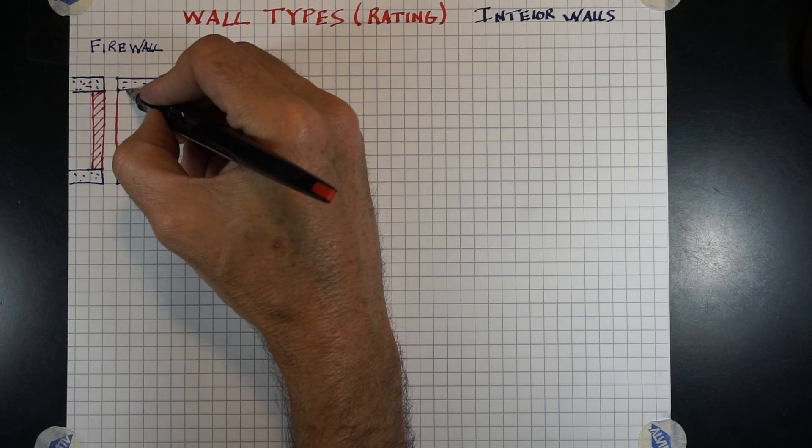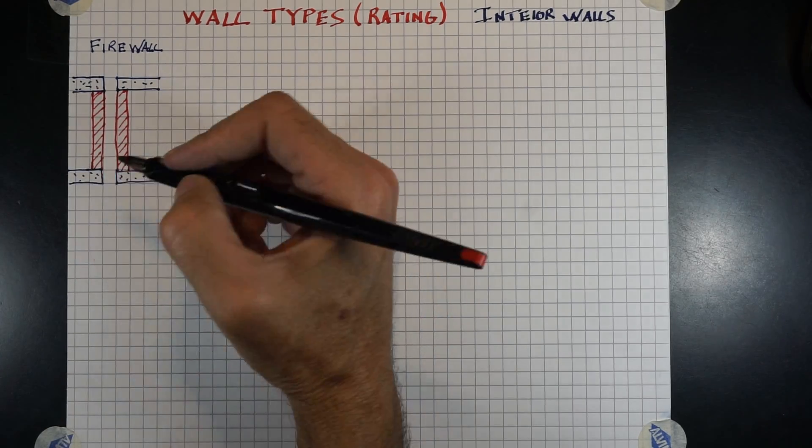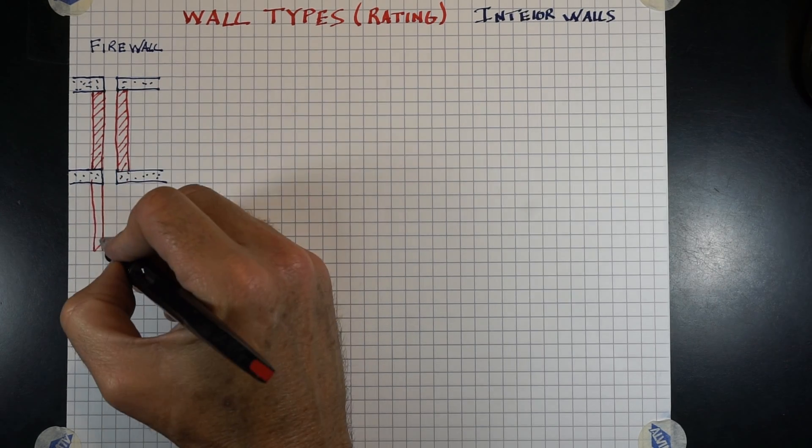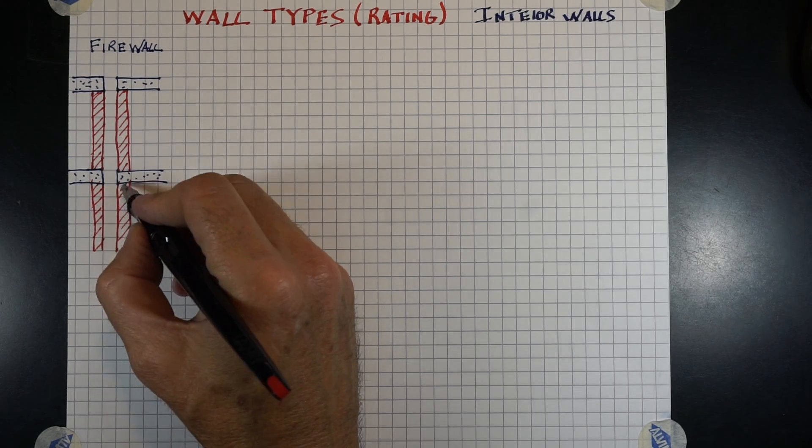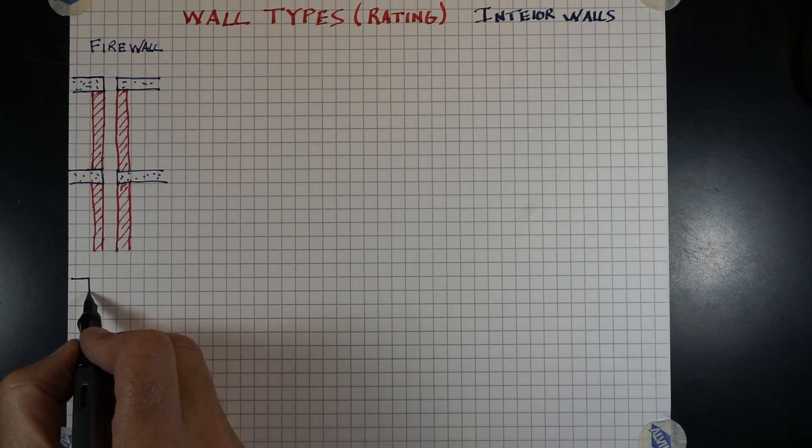Therefore, you can take advantage of the height and area ratio if they're two separate buildings. With a firewall, as illustrated here, the wall must stand on its own independent of the structure it's adjacent to.